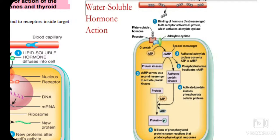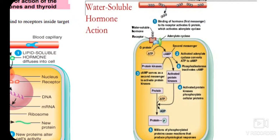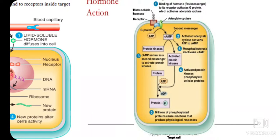The activated protein kinase phosphorylates cellular proteins by attaching a phosphate group to them, forming phosphorylated cellular protein. This phosphorylation causes changes in the protein, and the hormone acts on the target cell through this mechanism.